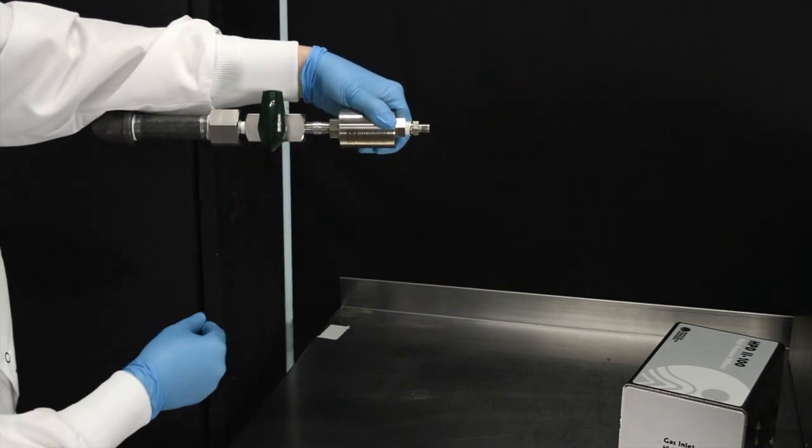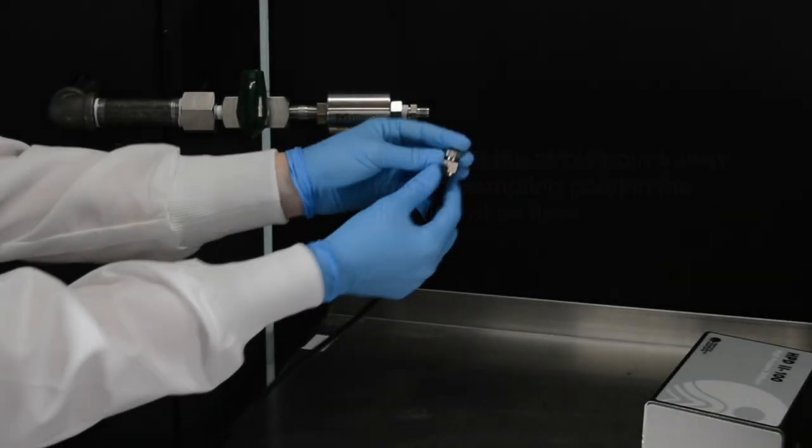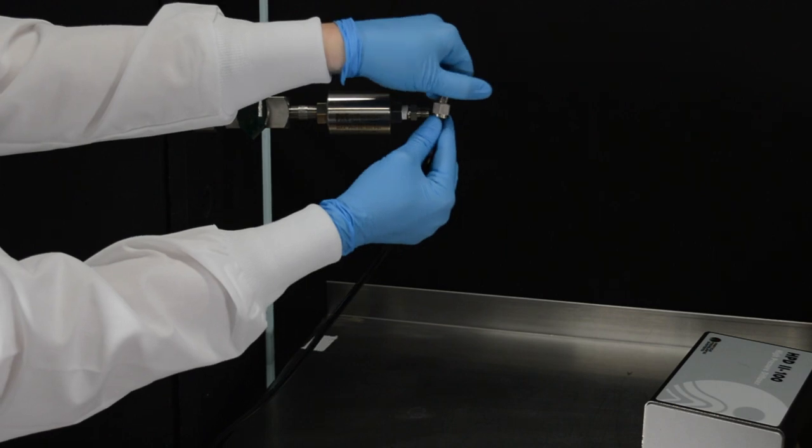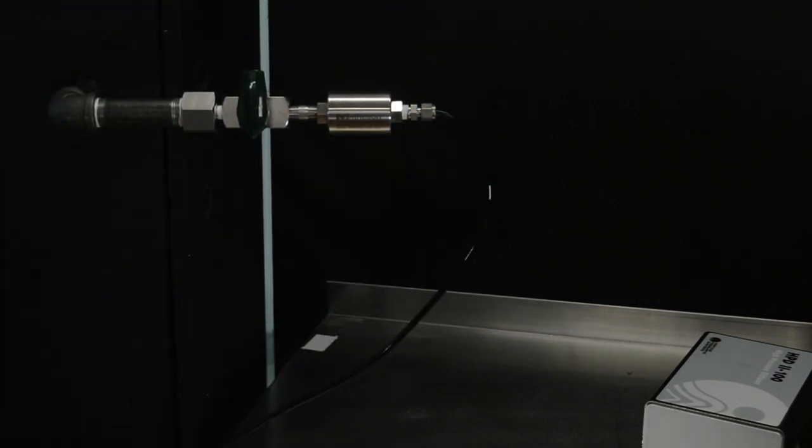Ensure that the arrow points away from the sampling point in the direction of the airflow. Unscrew the silver caps from both ends of the black beveline tubing. Attach one end of the black tubing to the stainless steel filter.